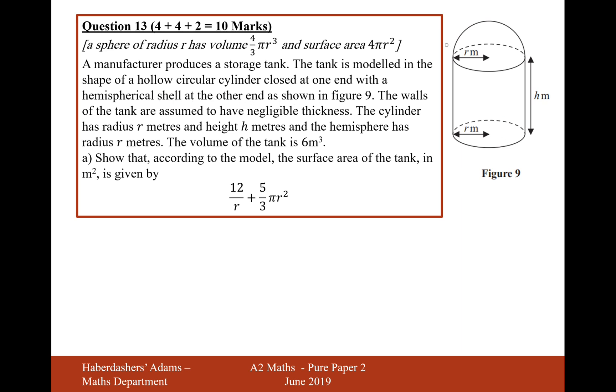It's got a base and a top. The walls of the tank are assumed to be negligible thickness. The cylinder has radius r and height h and the hemisphere has radius r metres. The volume of the tank is 6 metres cubed. Show that, according to the model, the surface area of the tank in metres is given by this expression here.